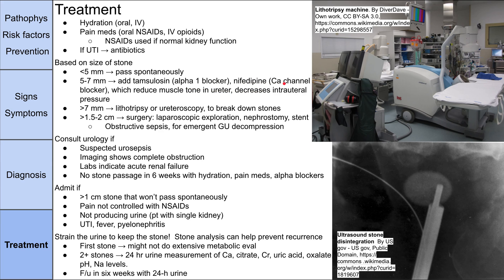For stones bigger than seven millimeters, you might consider admission. This is when lithotripsy is appropriate — using sound waves focused on the stone to break them up so smaller fragments can pass. If the stone is really big, 1.2 to 2 centimeters, you might consider surgery as an inpatient. During surgery, options include laparoscopic exploration, nephrostomy, or placing a stent.